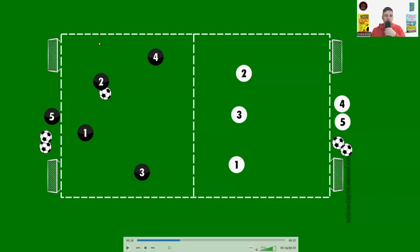We've got a large rectangle set up with two mini goals at either end. We've got four attackers with a ball, three defenders, and then some spare players over the back there. The aim of this game is for the four attackers to work their way across, and then once they get across the halfway line, they can score in either of the mini goals. The aim of the three defenders is to stop them doing this.